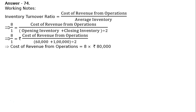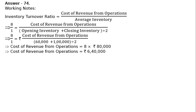This implies that cost of revenue from operations equals Rs. 80,000 multiplied by 8, by cross multiplying. We get cost of revenue from operations equal to Rs. 6,40,000. We have obtained this cost of revenue from operations, and selling price is 25% above cost.